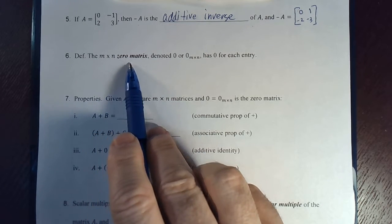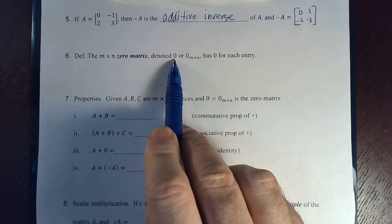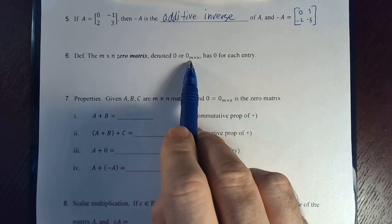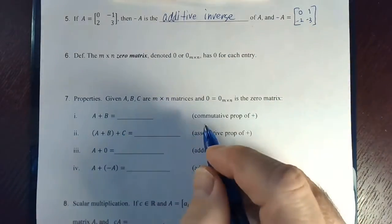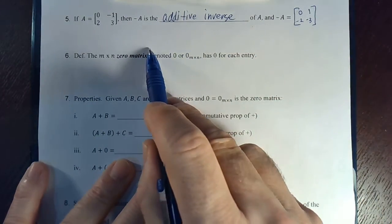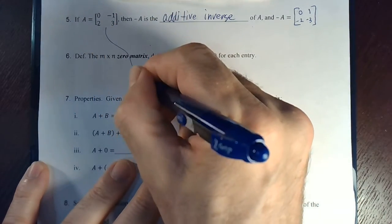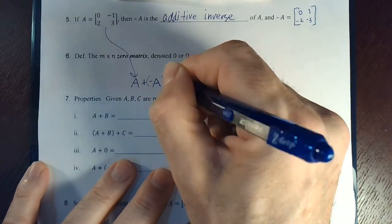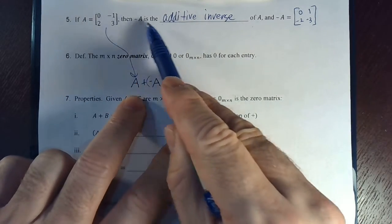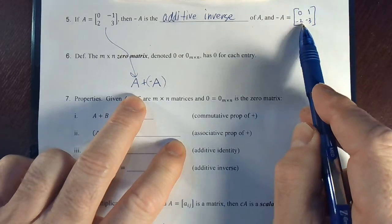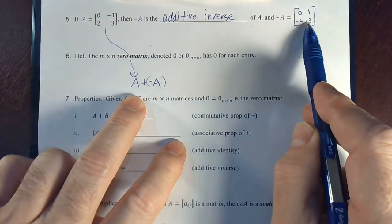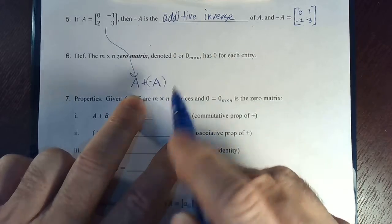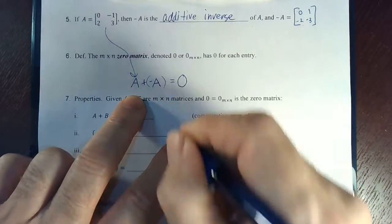Well, the M by N zero matrix can be denoted with a 0. If there's no ambiguity, if you know what size matrix you're talking about, you can just call it big 0. Or you can say 0 and you can actually specify the size of it. Notice that if we go to the above, A plus negative A, this matrix plus this matrix gives us what? Well, if you add the corresponding entries, you get 0, 0, 0, 0. This additive inverse, again, just comes from the same term we use for real numbers. All right, so this is the 0 matrix.